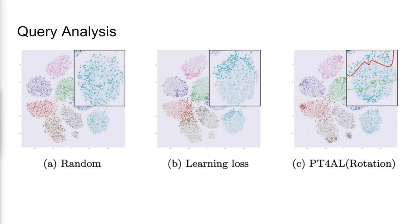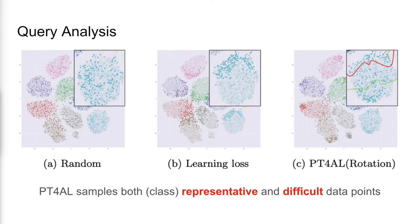PT4AL initially samples from batches with high pretext task loss, where the features are concentrated in the boundary regions. As the sampler progresses to batches with lower loss values, the queried points propagate to the remaining regions of the class clusters. Such behavior is a mix of uncertainty-based and distribution-based methods, mitigating their flaws while sampling both representative and difficult data points.